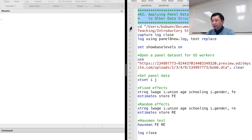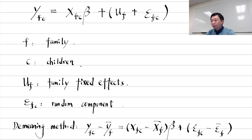I assumed that there is something in common for all the descendants from the same original family, such as the family tradition or genetic characteristics that passed down over generations. It is the family fixed effects. I allowed the unobserved family fixed effects to be correlated with the expenditure variables and used the within-family transformation to remove the family fixed effects.